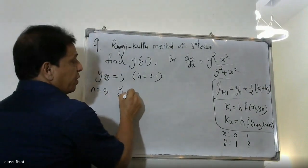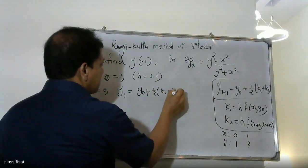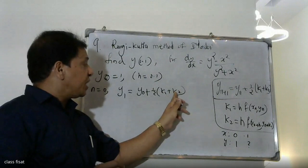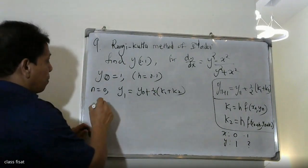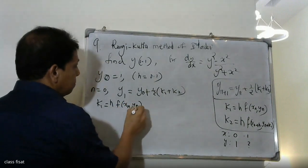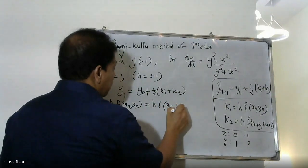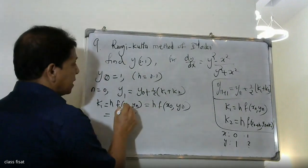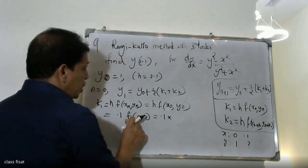With n equal to 0: y1 is equal to y0 plus one-half into (k1 plus k2). Here x naught equals 0 and y naught equals 1. k1 is equal to 0.1 times f of (x_0, y_0) — that is 0.1 times f(0, 1).